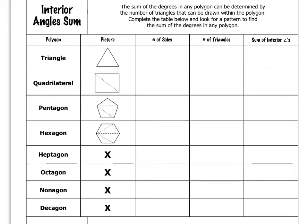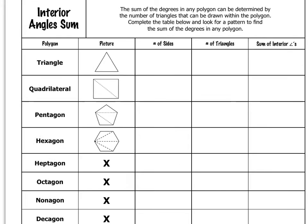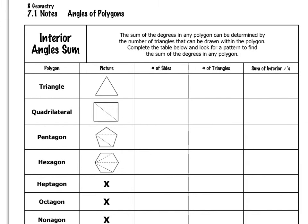The first thing that we're going to focus on is what's called the interior angles sum. That says that the sum of the degrees in any polygon can be determined by the number of triangles that can be drawn within the polygon. So, what we're going to do below is fill out this table and look for a pattern so that we can find the sum of the degrees of the interior angles within any polygon.